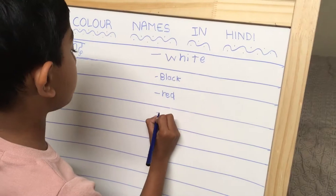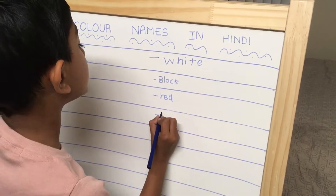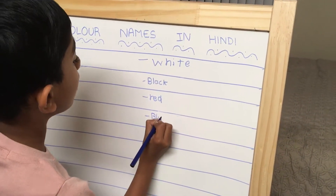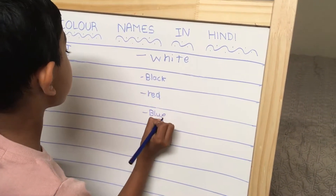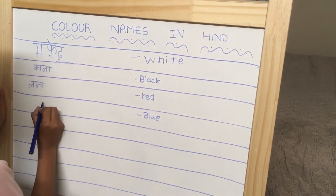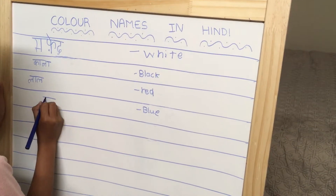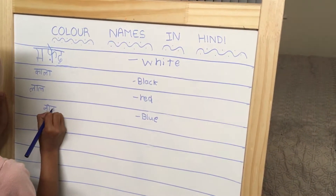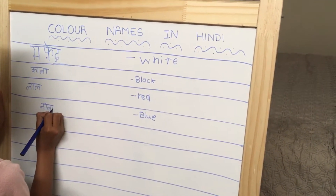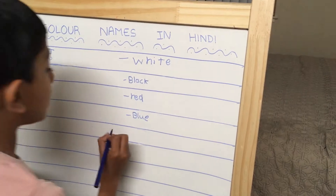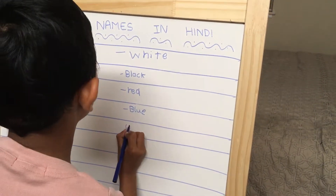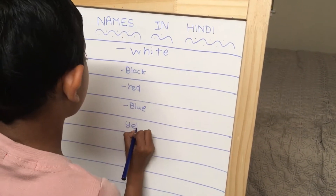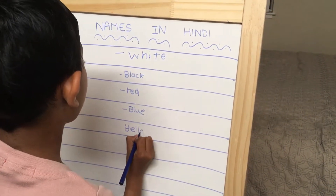Blue is called Neela. Yellow is called Peela.